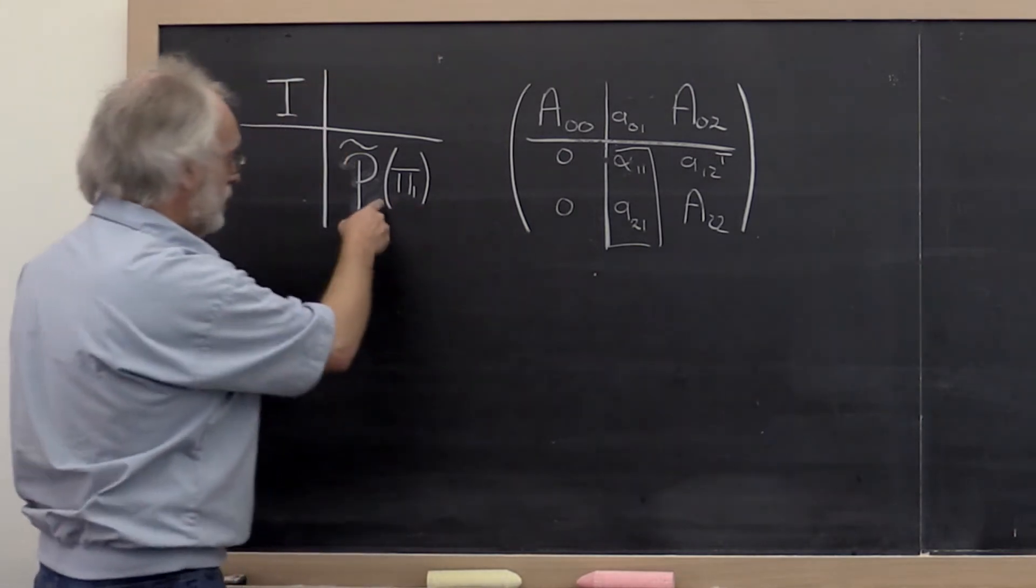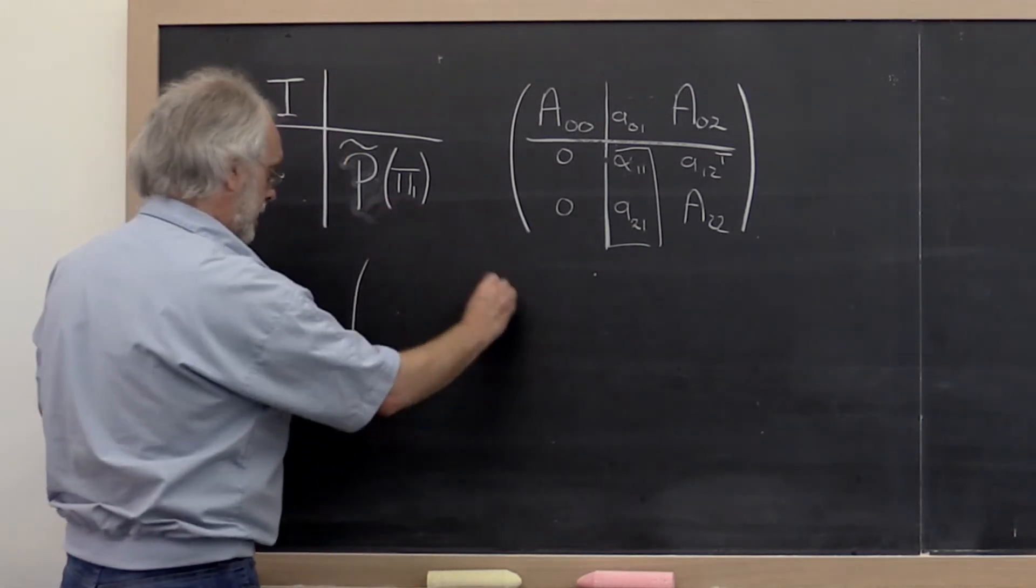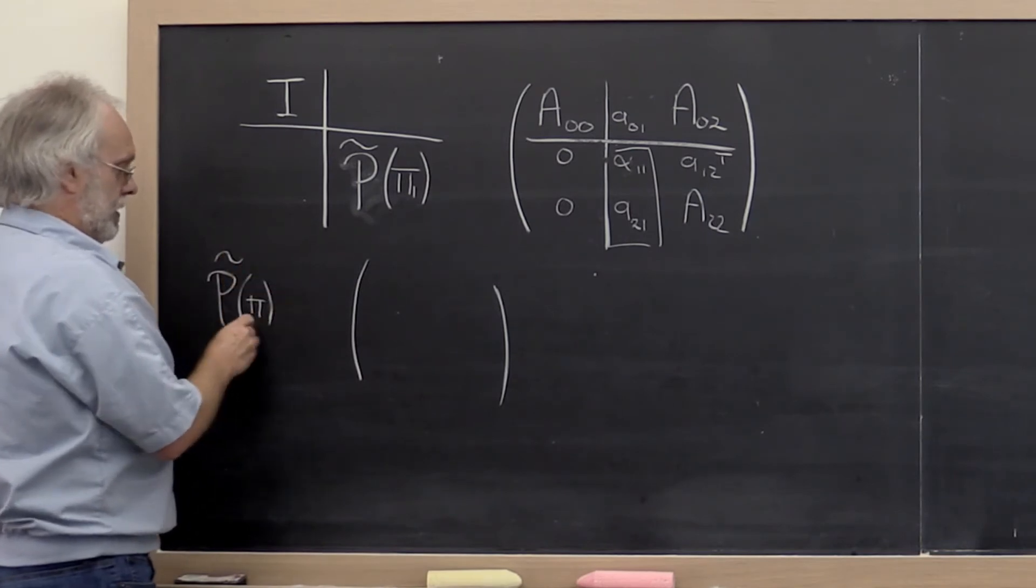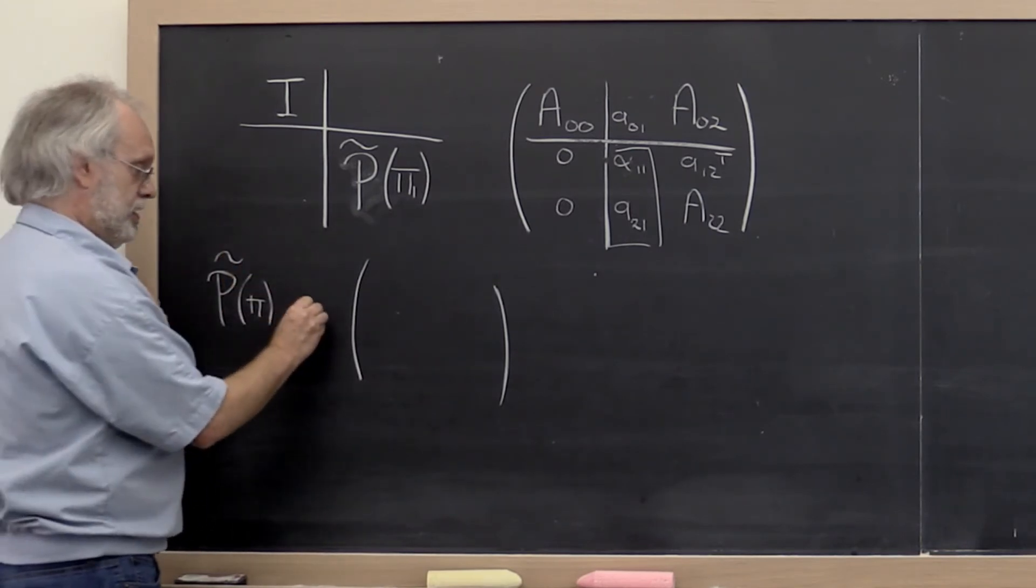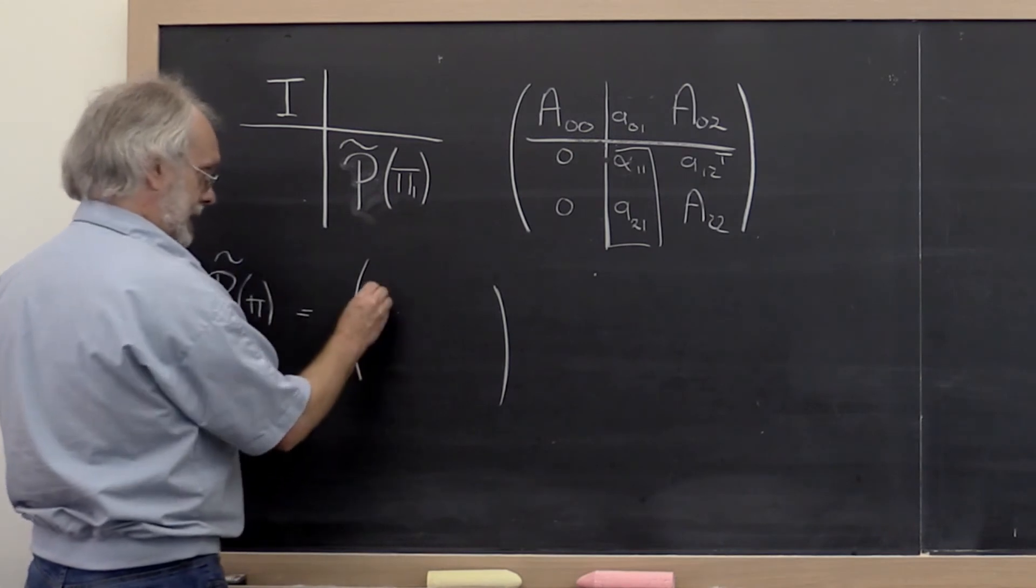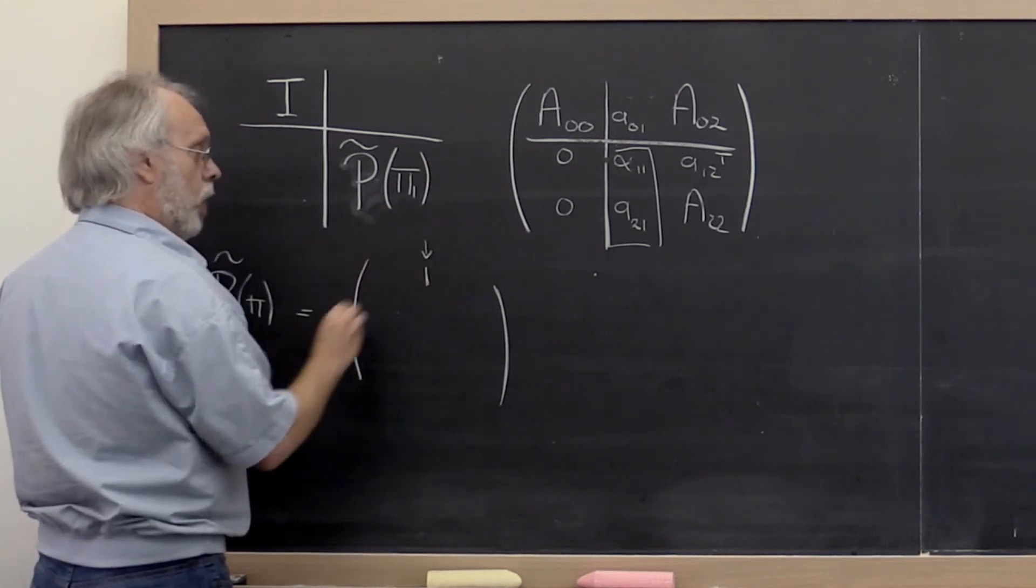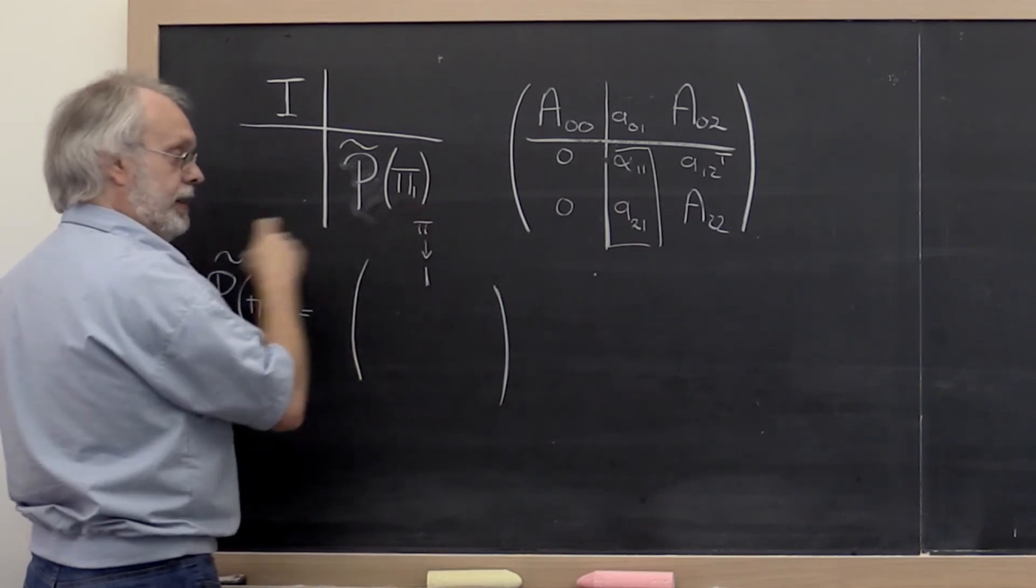So that matrix actually has a very special form. That matrix P tilde of pi, now let's just say of any integer, is given by, well you'll have a one in the column indexed with pi.